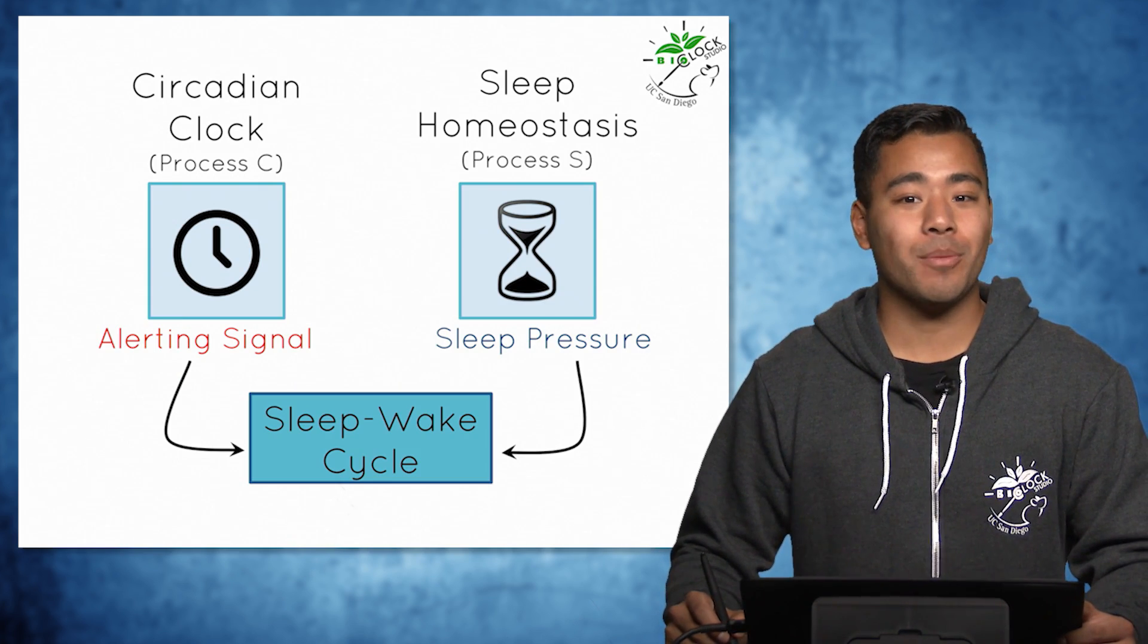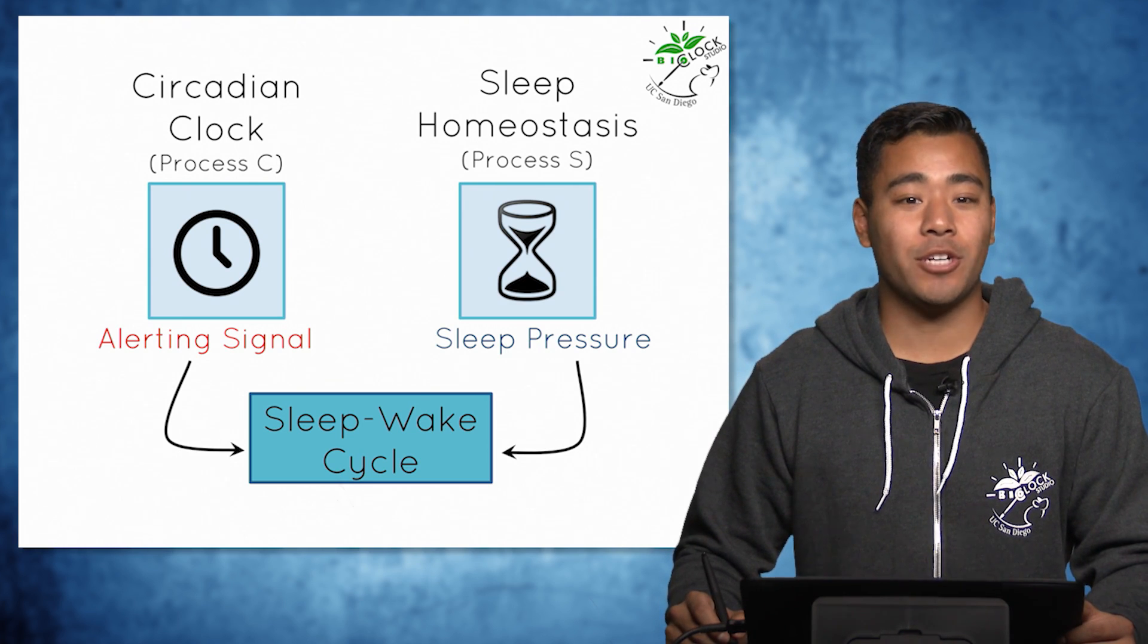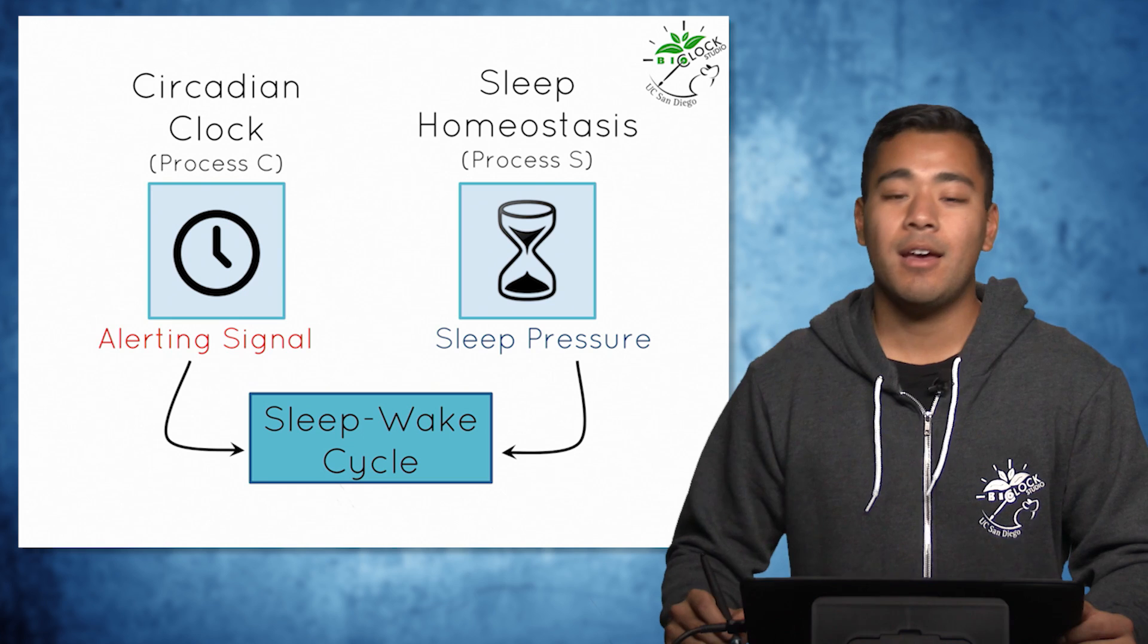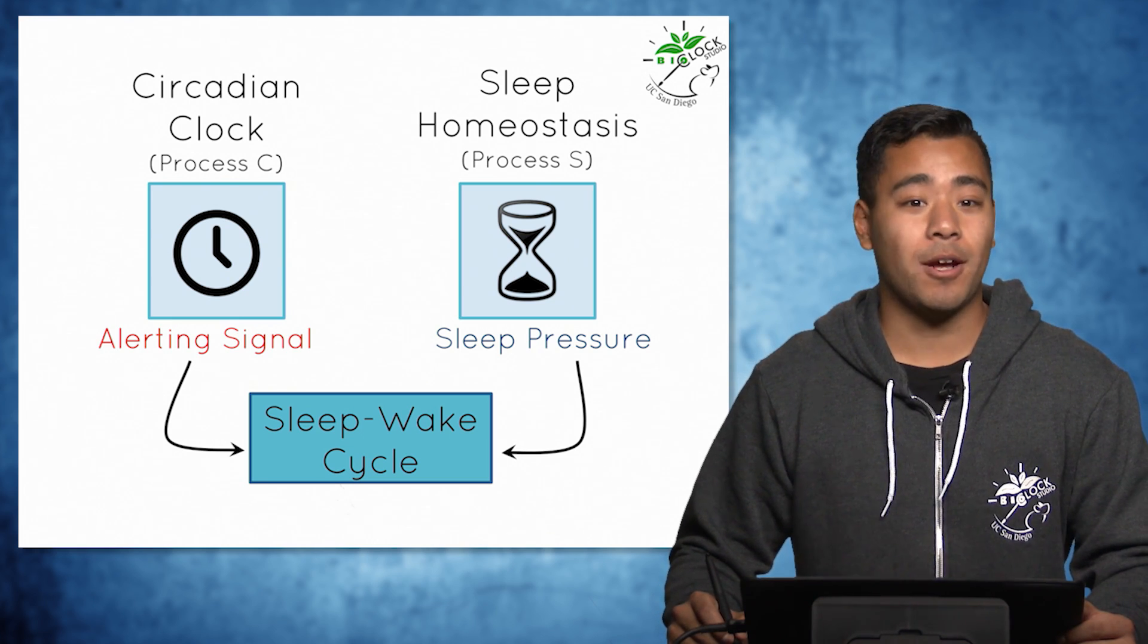Sleep, in its simplest form, is controlled by two processes: the circadian clock, or process C, and the sleep homeostasis, or process S.